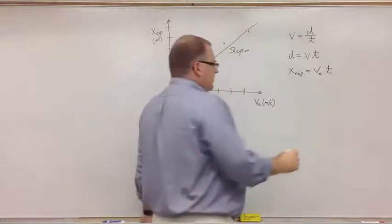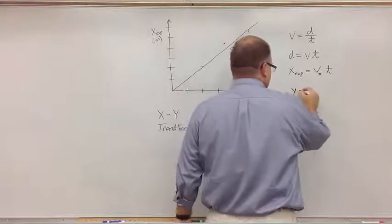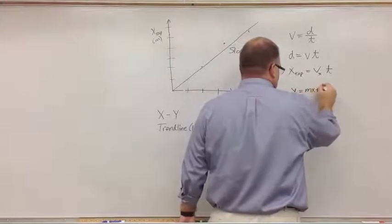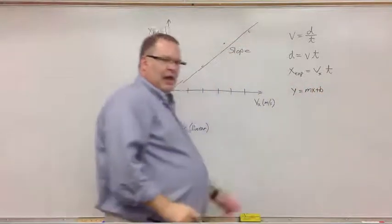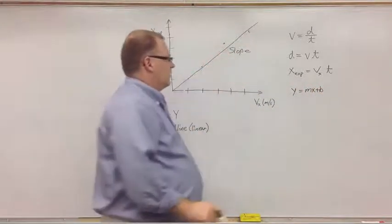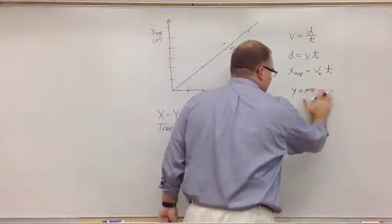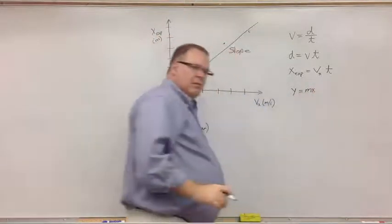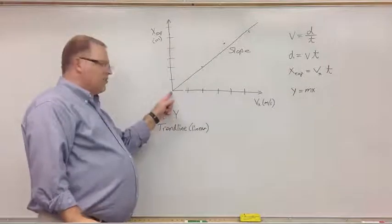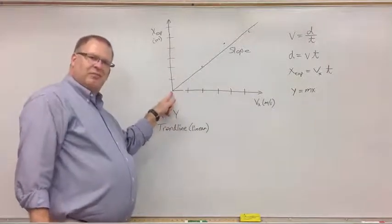Now, if I think about that similar to the equation of a line, this line, I'm going to erase the b. Because the y-intercept is the origin. Remember, we use the origin. It's zero.